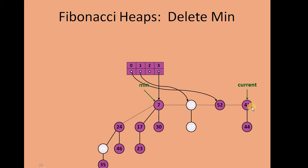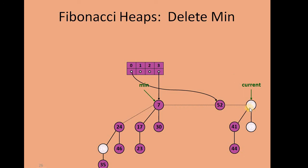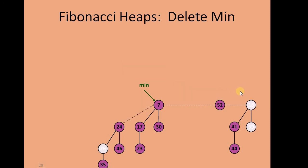Moving ahead, we encounter a new current node with height 1, but buffer position 1 already has a tree of height 1. We merge these two trees: the smaller node (18) comes up in the root list and the larger tree becomes its left child. Now all trees in the consolidated heap have different heights. We have successfully consolidated this Fibonacci Heap, and the new Fibonacci Heap after the delete-min operation is formed with the min pointer pointing into the root list. This is how we perform the delete-min operation.